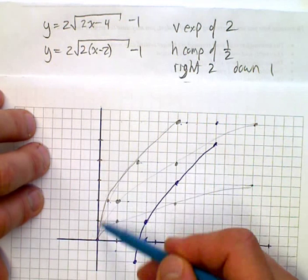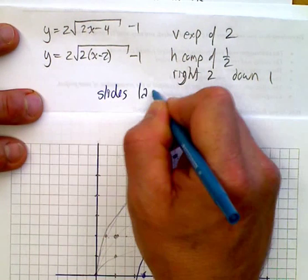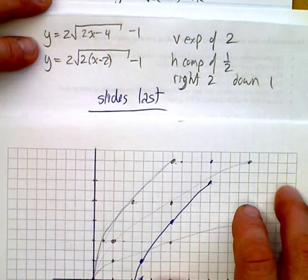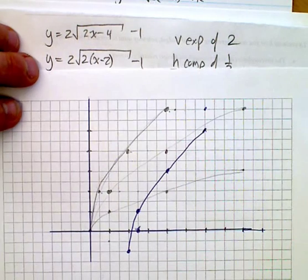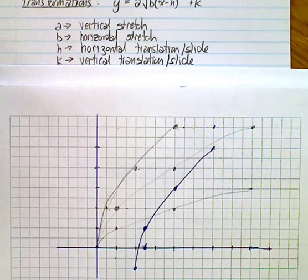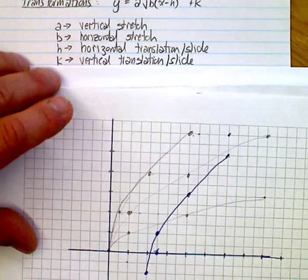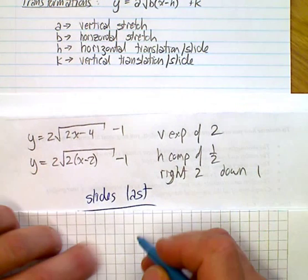You can see the final result has the same shape as the original — that's the effect of the transformation. Remember: slides last. Now, these are not necessarily easy to do, and if you'd like to practice your vertical and horizontal stretches, I'd suggest using apps on your phones or your graphing calculators to check what happens. They work the same way — it's just a matter of visualizing what we're doing.